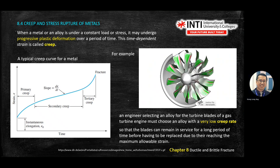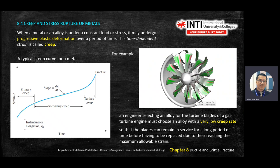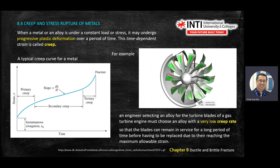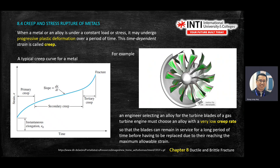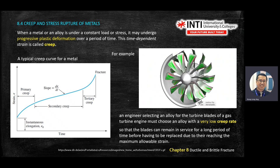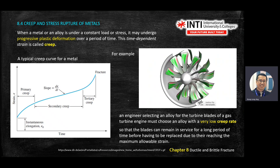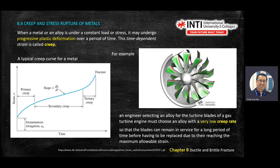On the creep graph there are three regions: primary creep, secondary creep, and tertiary creep.